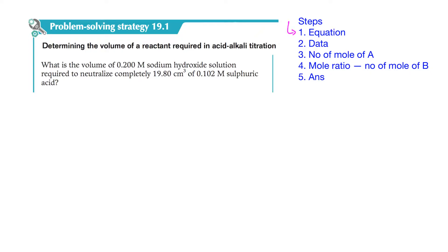First, find a balanced equation. This is very important because we need to rely on the equation to get the mole ratio. Second, write down the data, because data tells us which chemicals we have a number of moles for and which one we are looking for. If we have enough data to calculate the number of moles of one substance, we find that first, then by mole ratio we find the moles of the other, and finally do the calculations.